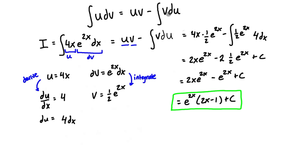We can factor to get e^(2x)·(2x − 1) + C, which is the solution. When you see the integration by parts formula on a formula sheet, remember: you're not initially given u and v — you're given an integral and you assign part of it as u and part as dv. You then calculate v by integrating dv, and du by differentiating u, then substitute everything into the formula.